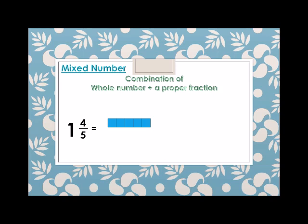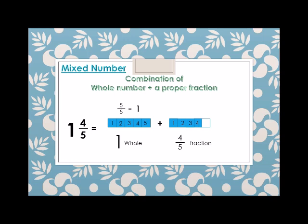Let's look at another example: one and four fifths. We count one, two, three, four, and five parts, so the whole circle is equivalent to five over five, or simply equals one. One is the whole number, plus four over five, which is the proper fraction.